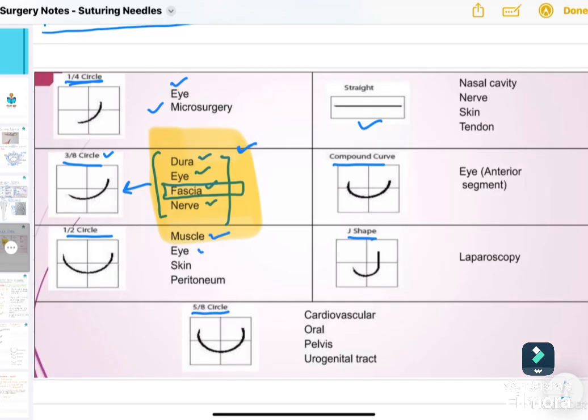Half circle is used for muscle, eye, skin, peritoneum. Straight needles are used for nasal cavity, nerve, skin, and tendon. Compound curve for eye. J-shaped we use for laparoscopy. 5/8 circles for cardiovascular, oral surgery, pelvis, and urogenital tract. Once you see this table twice or thrice, you can easily correlate which needle is used for which purpose.